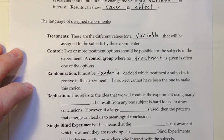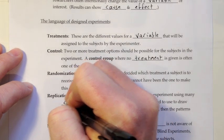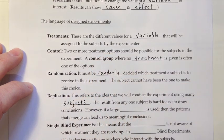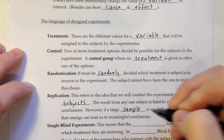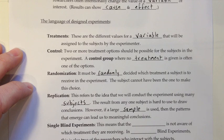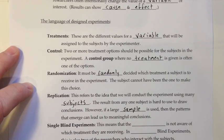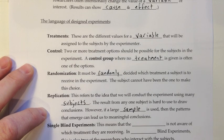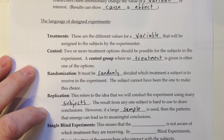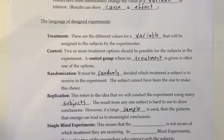We also want to make sure that our designed experiments have replication. This refers to the idea that we will conduct the experiment using many subjects. The result from any one subject is hard to use to draw conclusions. However, if a large sample is used, then the patterns that emerge can lead to meaningful conclusions. If you give a baldness treatment to one person and it works, you don't know if that person was going to grow hair back by themselves anyway — it's hard to decide what's really causing that. You want a large number of people getting the real treatment and the control so you can see if there's a real pattern.